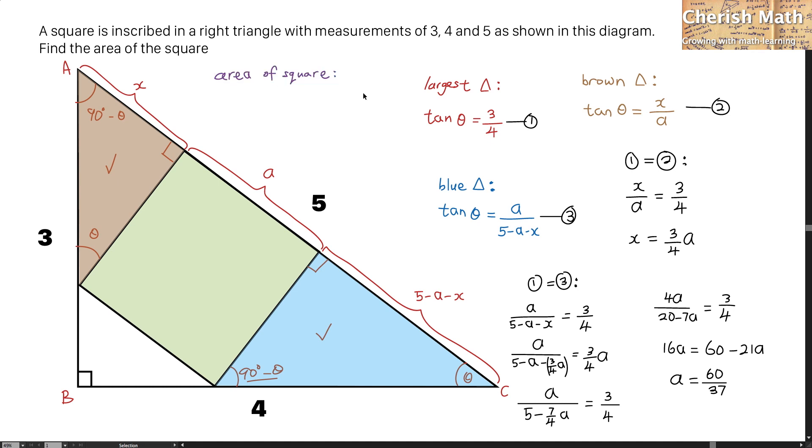To find out what is the area of this square, I will have to use A multiplied A. And that is, by using 60 over 37, multiply the same number, which is 60 over 37. And the value that I'm getting here is approximately 2.63 units squared.